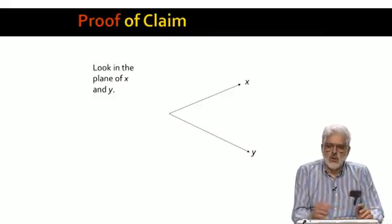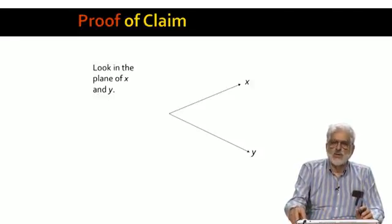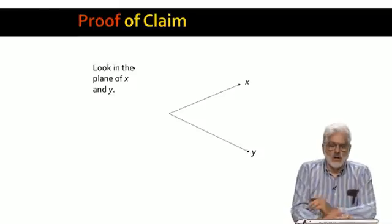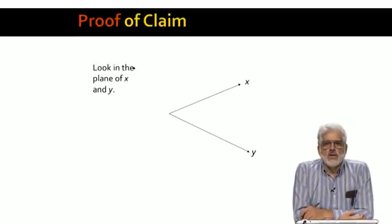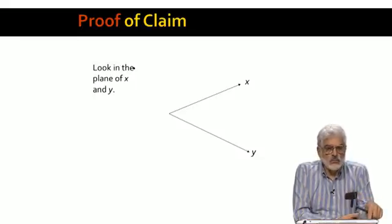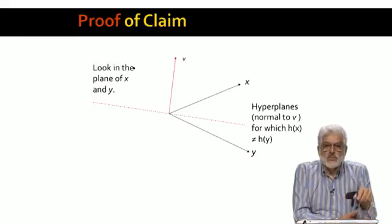This picture explains why we can get cosine distance from the random hyperplane hash functions. First, let us look at the plane containing the two vectors x and y, whose cosine distance we want to determine. Any vector v has a hyperplane normal to v. That is, the set of all points whose dot product with v is 0. This hyperplane is what we are really choosing when we choose v, which is why the method got its name random hyperplanes. The dashed line is the intersection of this hyperplane with the plane of x and y. The vector we show as v is really the projection of v into the plane of x and y.